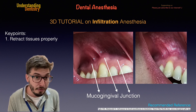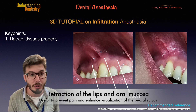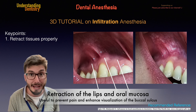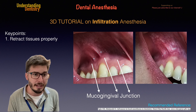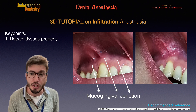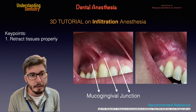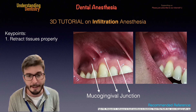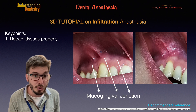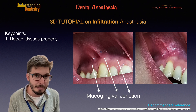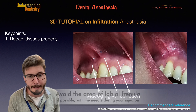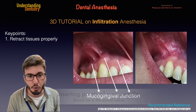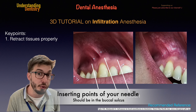The first key point is that we need to retract the tissues properly, which will make the anesthesia even less painful for the patient. You can retract the tissues with the mirror to avoid pinching yourself with the needle, but if you use your fingers you could retract a little bit more. We have two different regions, one slightly posterior than the other, and of course you should avoid the frenulum.